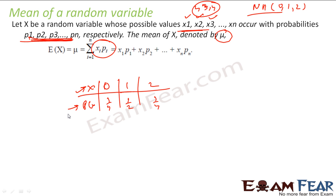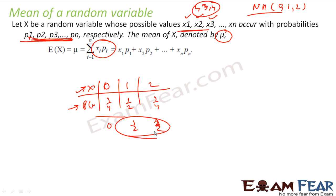Now if you want to find the mean, you multiply xi and p(xi) and add them. For example, x can be 0, 1, 2 with probabilities 1/4, 1/2, and 1/4. You get 0 times 1/4, plus 1 times 1/2, plus 2 times 1/4. Then you add, and that is what the mean mu is — sigma xi pi.